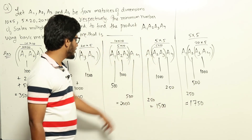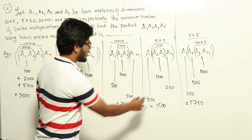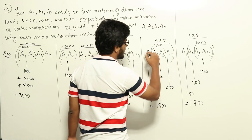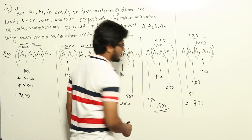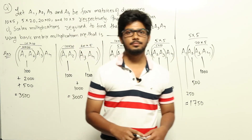Clearly, the minimum among all five chains is 1500, achieved using chain 4 where we compute A1·((A2·A3)·A4). So the answer is 1500.